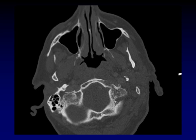Here's a bone window right next to the hypoglossal canal. There it is — there is the destructive mass that is eroding into the hypoglossal canal and injuring the hypoglossal nerve, causing that denervation atrophy. Look at the normal cortex on the other side that's been disrupted on this side. Look at the disruption of the medullary cavity. This is a metastasis from colon cancer that has hit the skull base and injured the 12th cranial nerve. Thank you very much.